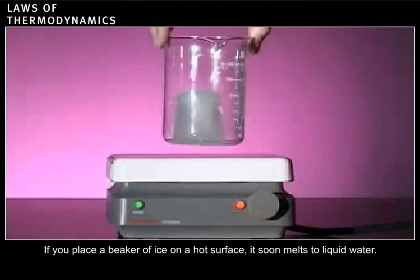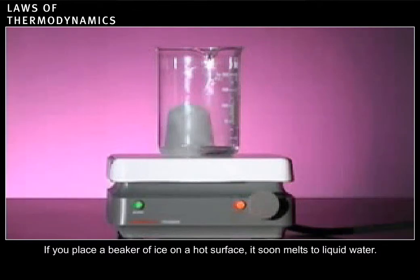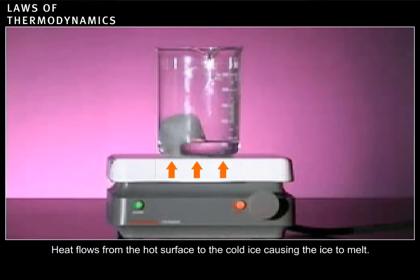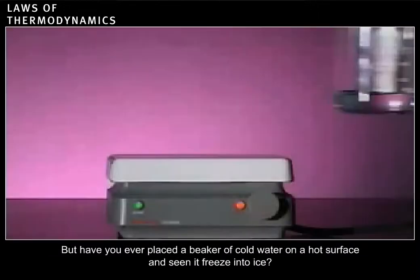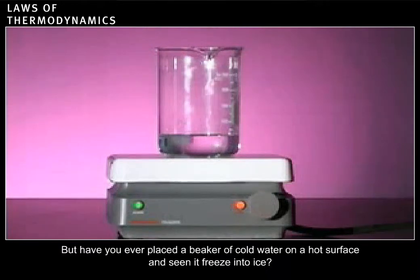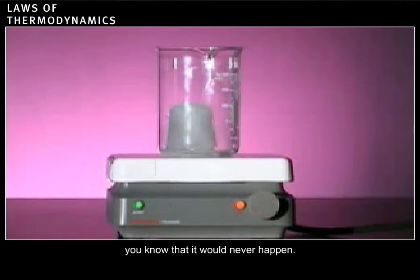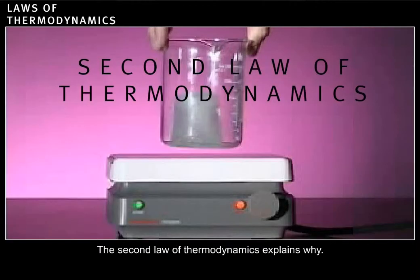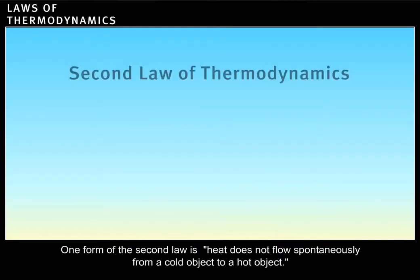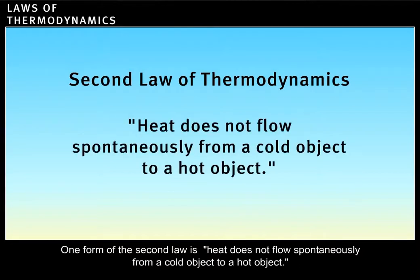If you place a beaker of ice on a hot surface, it soon melts to liquid water. Heat flows from the hot surface to the cold ice, causing the ice to melt. But have you ever placed a beaker of cold water on a hot surface and seen it freeze into ice? This would require heat to flow from the cold water to the hot surface. Although this would not violate the conservation of energy principle, you know that it would never happen. The second law of thermodynamics explains why.